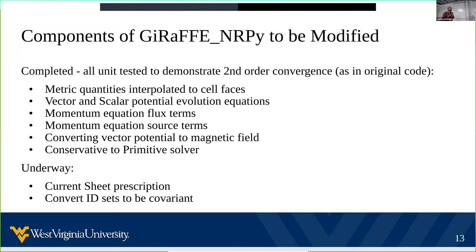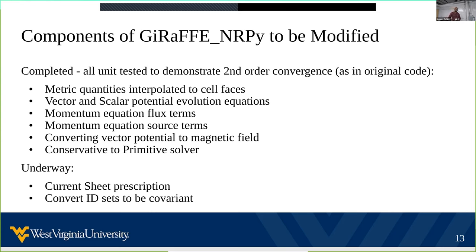Modifying the equations isn't the only thing we have to do — we also have to modify some of the key algorithms. Listed here are some of the algorithms I've completed modifying so far, and they've all been shown to demonstrate second-order convergence, consistent with the original Giraffe code in the Einstein Toolkit. These include the A-to-B routine and the constraint damping solver. Currently I'm working on making our constraint damping prescription more robust for generic coordinate systems, as well as making our initial datasets covariant.